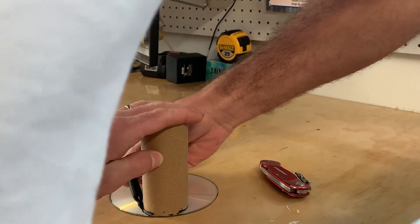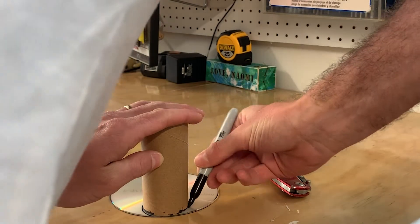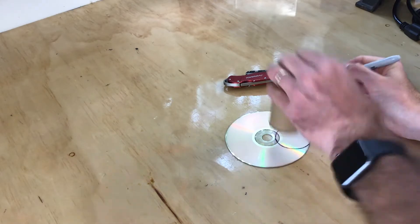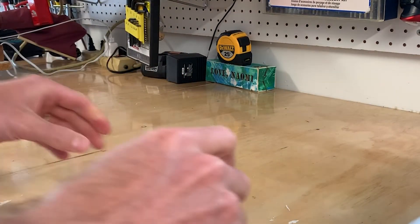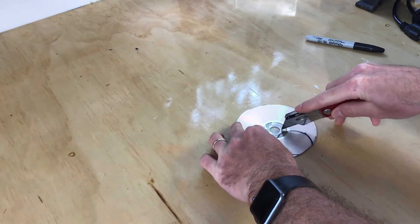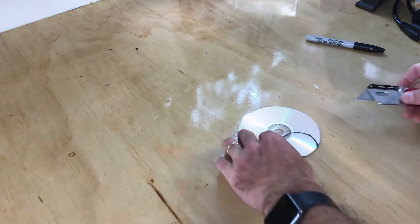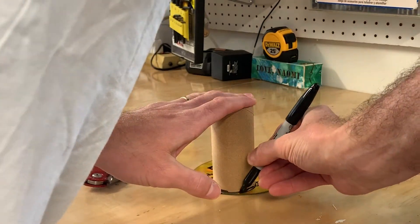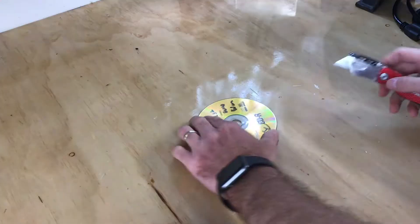I tried this with a couple different types of discs like CDs and DVDs, and it turns out that the best option is an old rewritable CD because you're going to remove the film on the top, and it doesn't come off easily on most discs, but the old rewritable CD works best.